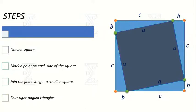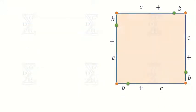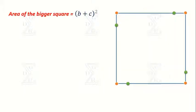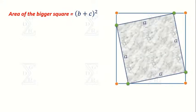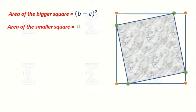Let us find the area of each. The side of the bigger square is b plus c, so the area of the bigger square is (b + c)². Similarly, the side of the smaller square is a, so the area of the smaller square is a².